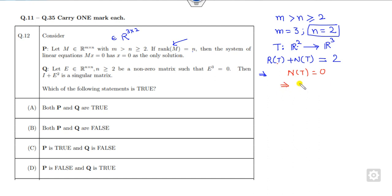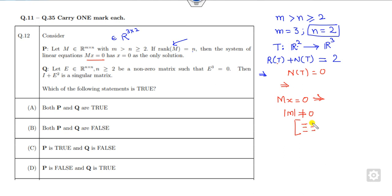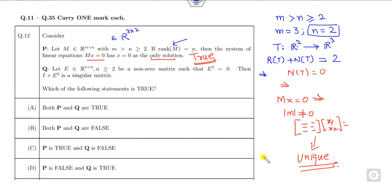Once the nullity is 0, it means there are no elements in the kernel. So for Mx = 0, the determinant is non-zero. If M is a 3×2 matrix with rank 2, consisting of variables x1 and x2, then the system has a unique solution — meaning Mx = 0 has only the trivial solution, so this statement is correct.